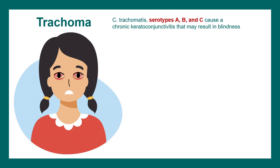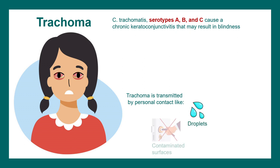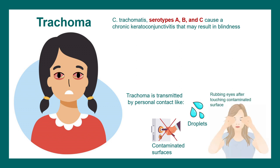Trachoma can cause chronic keratoconjunctivitis that may lead to blindness if untreated. It can be transmitted by personal contact — for example, droplet infection, or touching a contaminated surface and then rubbing the eyes.